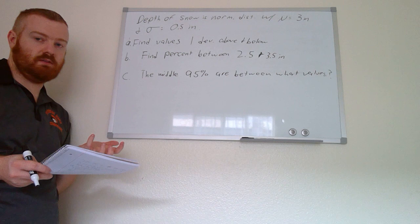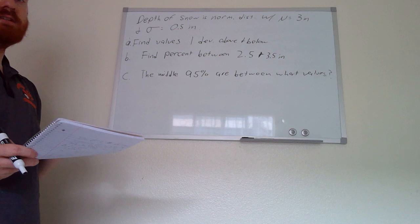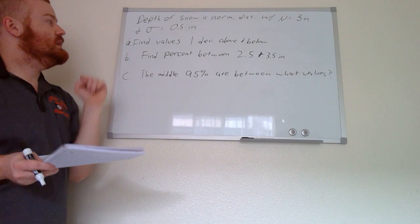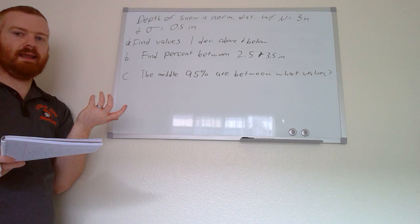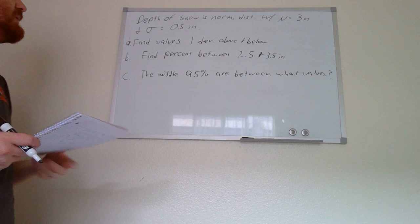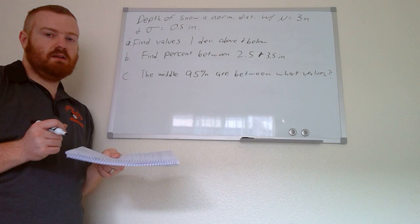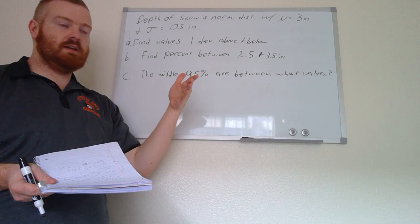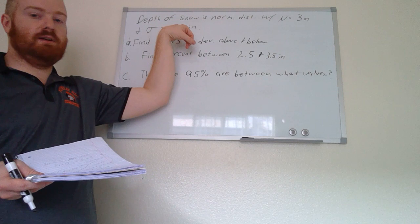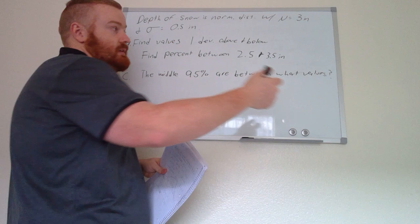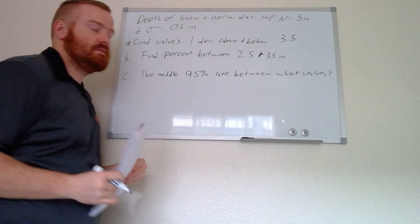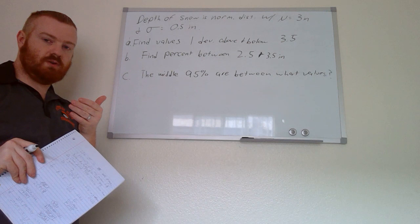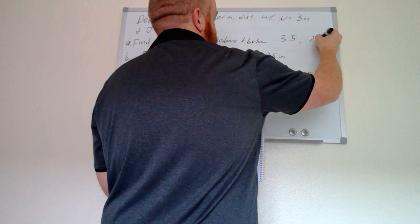For the next example, the depth of snow follows a normal distribution with μ = 3 inches and σ = 0.5 inches — imagine measuring snow depth across a neighborhood. For part a, we find the values one standard deviation above and below the mean. One standard deviation above: 3 + 0.5 = 3.5 inches. One standard deviation below: 3 − 0.5 = 2.5 inches.